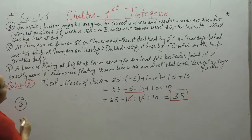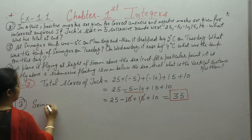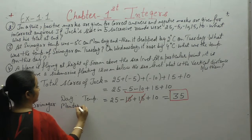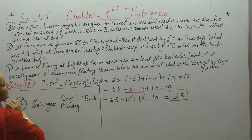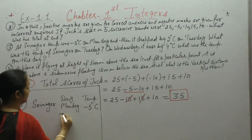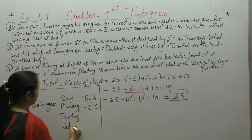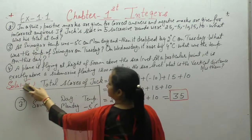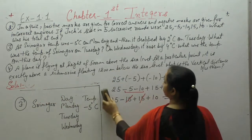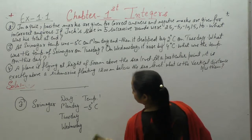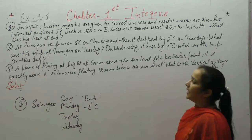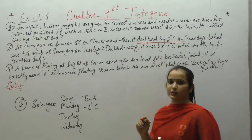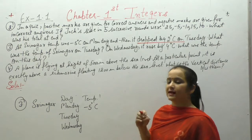Next is question number 3. At Srinagar, the temperature on Monday was minus 5 degrees Celsius. We need to find the temperature on Tuesday and Wednesday. The temperature dropped by 2 degrees Celsius on Tuesday — 'dropped' means it decreased, so we will subtract.